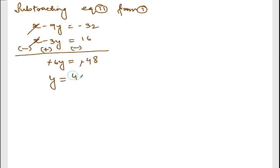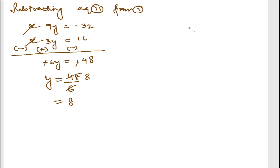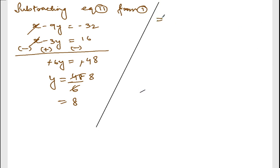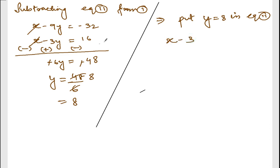The negatives cancel, so Y equals 48 divided by 6, which is 8. So Y is equal to 8. Now put Y equals 8 into equation number 2: X minus 3Y equals 16, so X minus 3 times 8 equals 16.